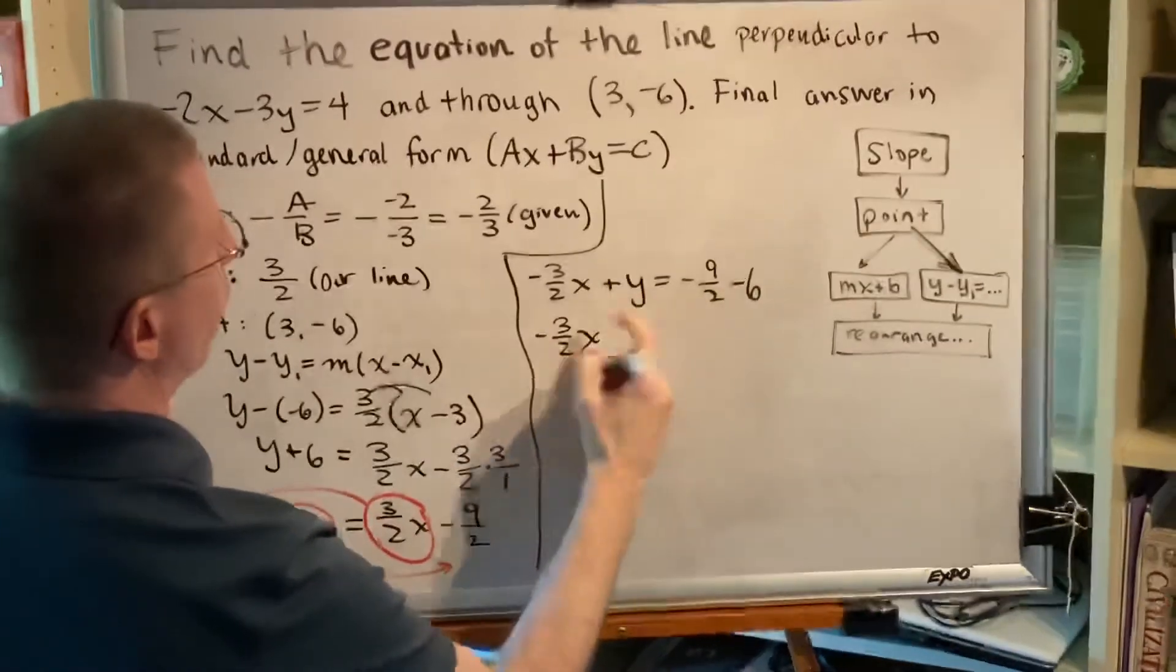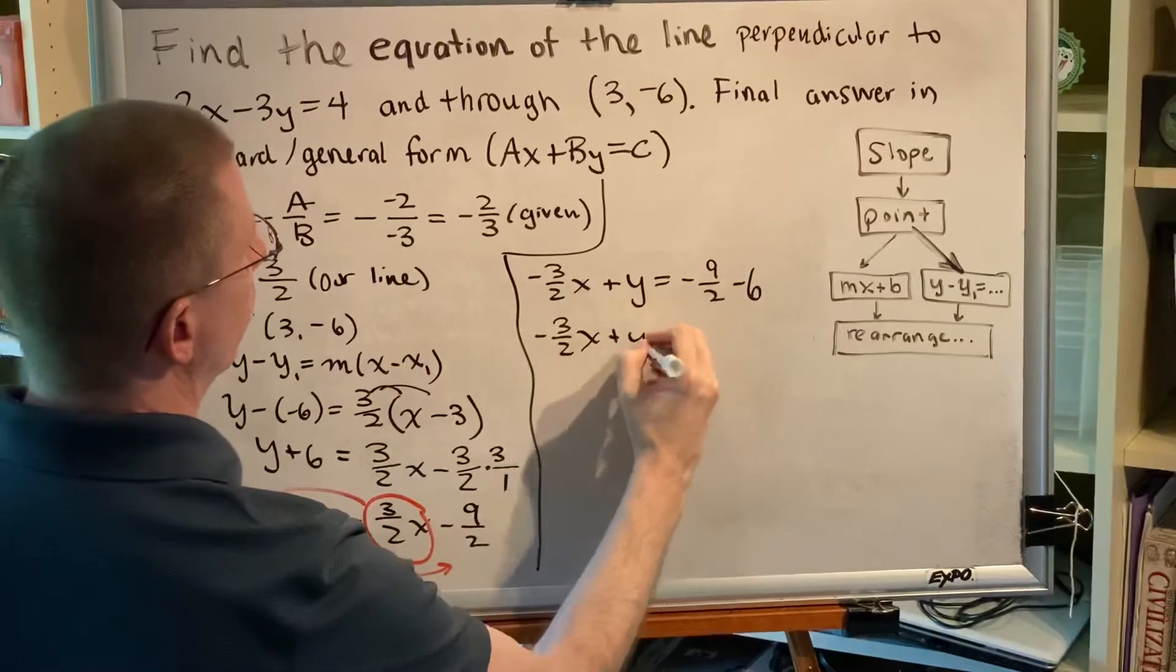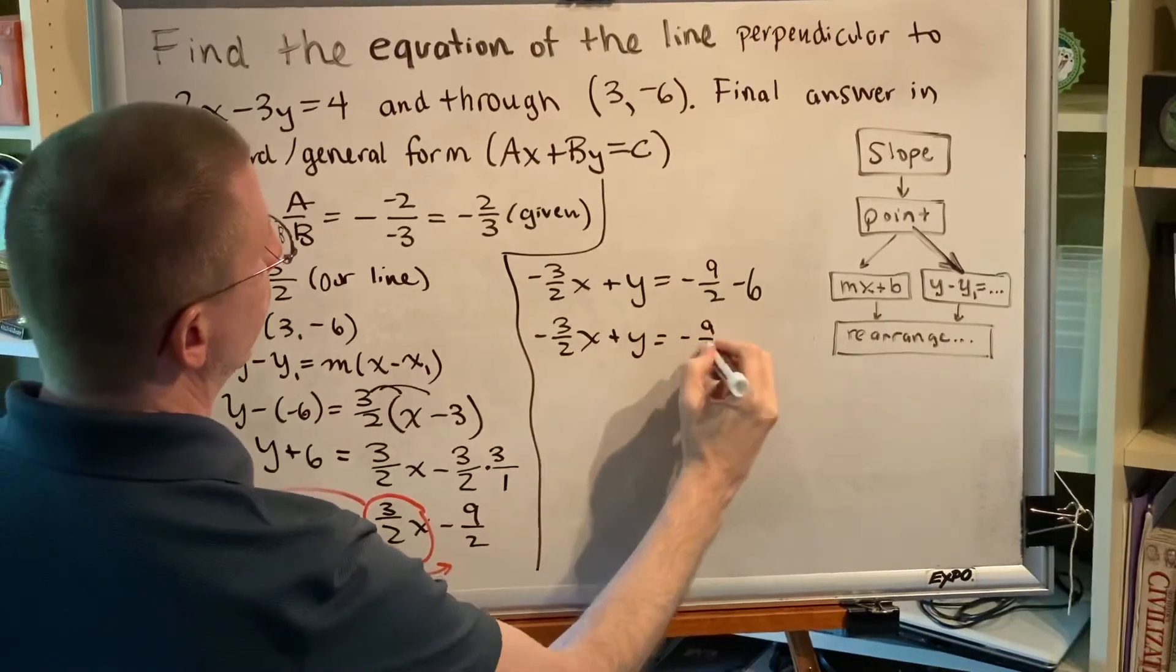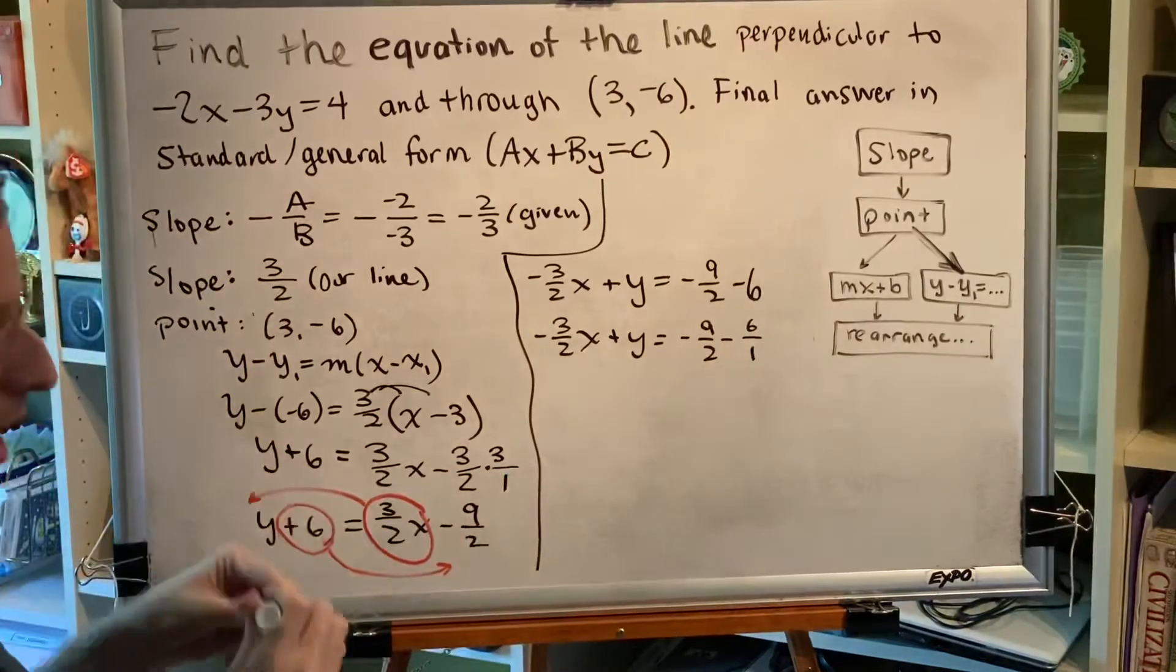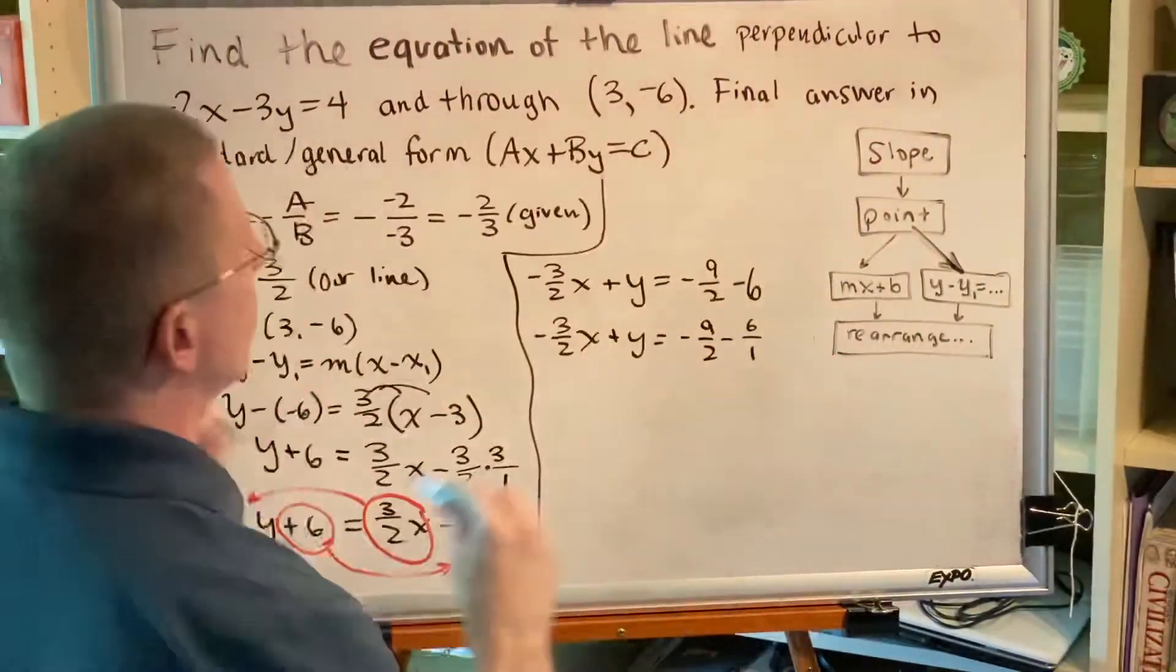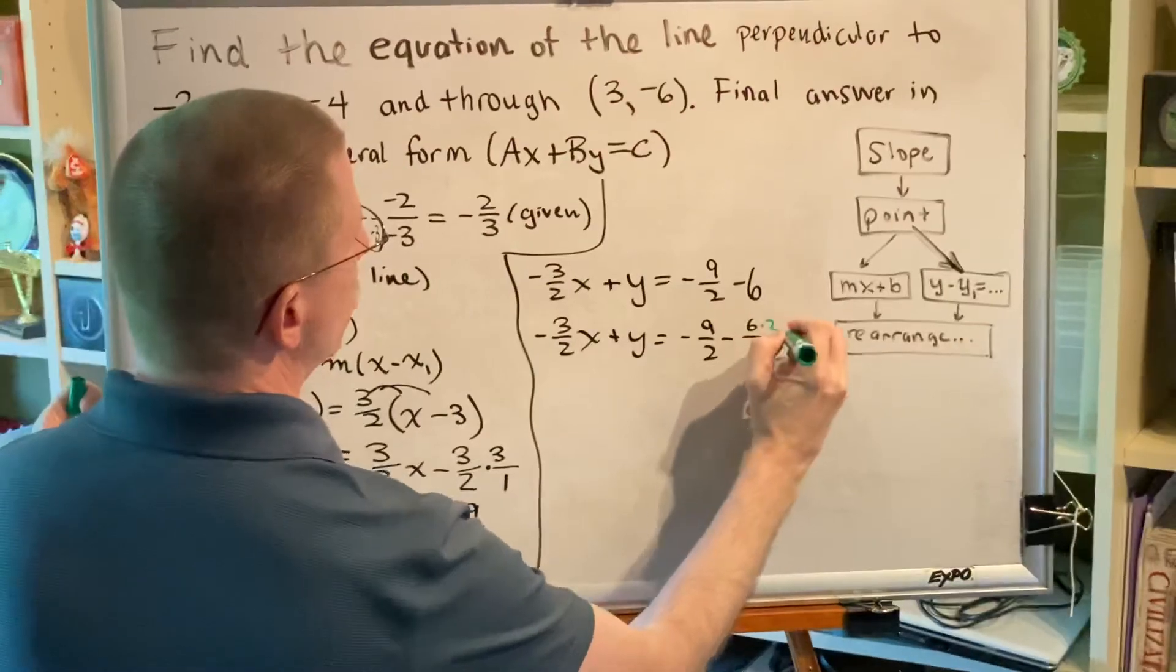Now combine the fraction with the integer. 6 is the same as 6/1 but I need a common denominator to combine two fractions together. Times 2 times 2.